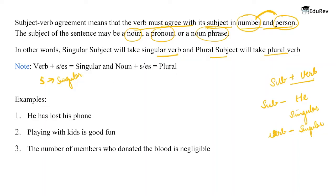Let's look at examples. 'He has lost his phone.' Who has lost his phone? He has — and the verb 'has' has an S, making it singular, matching the singular subject 'he.' 'Playing with the kids is good fun.' What is good fun? Playing is — so 'playing' is the subject and 'is' is the singular verb. Both agree as singular.